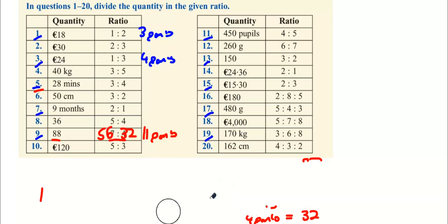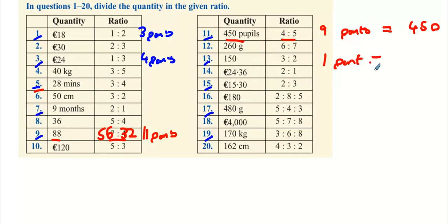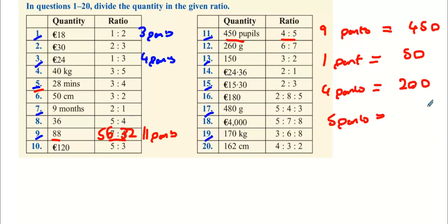Next we're on to question 11. The 450 pupils are broken up into the ratio four to five. Four plus five is nine parts, so nine parts equals 450. Divide both sides by nine — one part is 50. That implies four parts: multiply four by 50 to get 200. And five parts: five times 50 is 250.